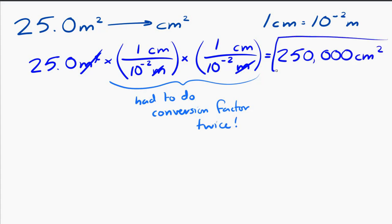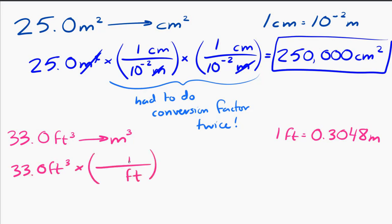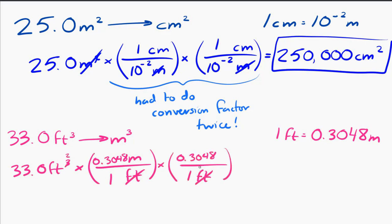The last example: 33 cubic feet converted to cubic meters, using the fact that 1 foot equals 0.3048 meters. Since I have cubic feet — feet times feet times feet — I have to apply the conversion factor three times to get rid of all three factors of feet. I end up with 0.934 meters cubed.